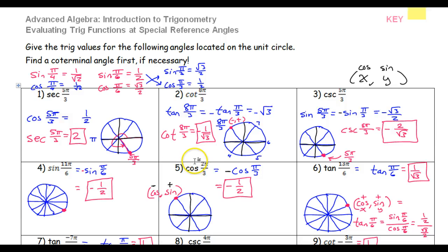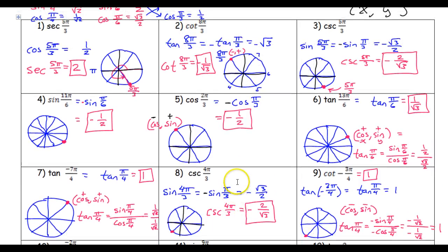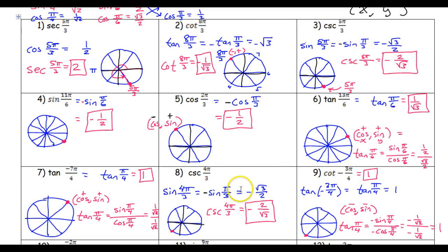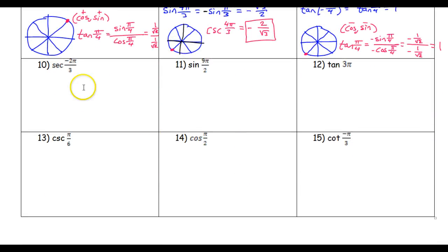In this video we will continue practicing finding trig functions at special reference angles. We have already done problems one through nine on previous videos, especially the first video. If you did not watch the video of problems one, two, and three, you need to go back and watch that before watching this video. In this video we're going to go ahead and do the last six examples.